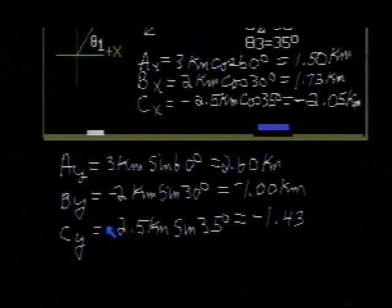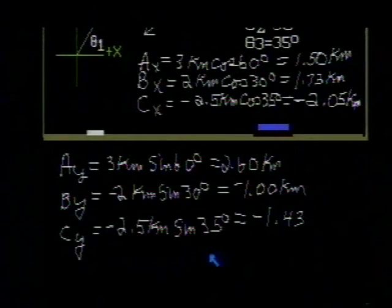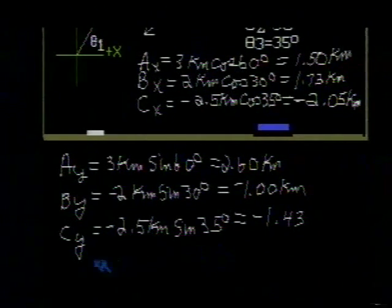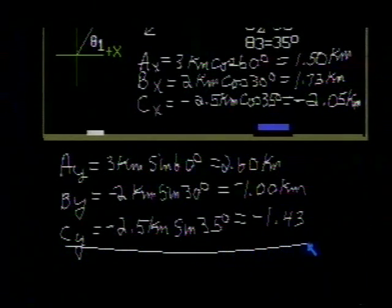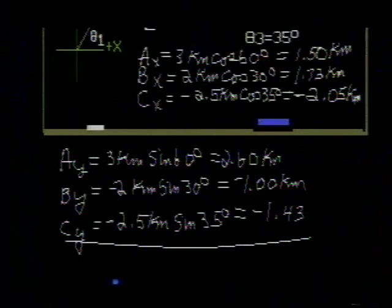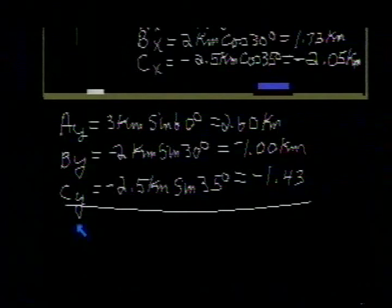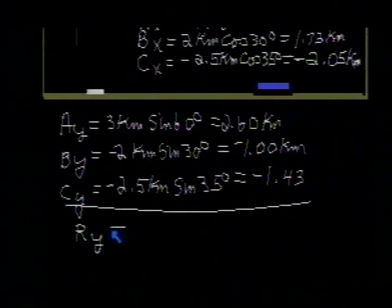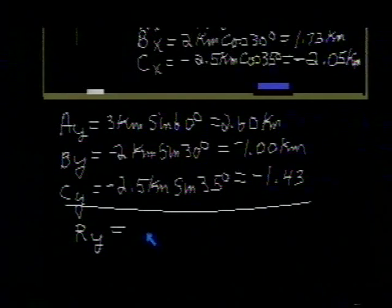All right. They are our components. The next thing to do is to add the components together so that we can find, doing it for the y component of our resultant first, we simply add up these three components. And if you do that, you will find that this is 0.166 kilometers.